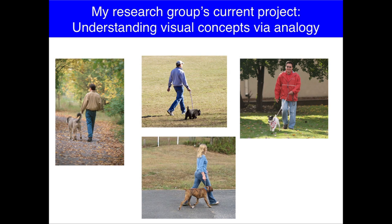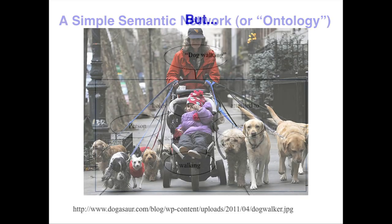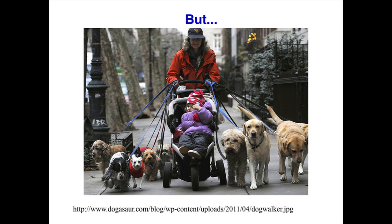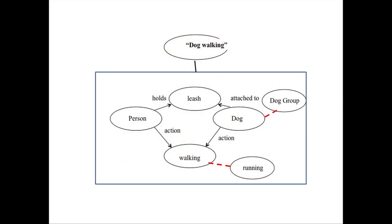Here's a simple visual concept that we've all seen — the concept of walking a dog. We might have a paradigm, semantic network, or what you might call an ontology for dog walking, where you have a person holding a leash attached to a dog who's walking. But there are some issues — like here's a lot of dogs, and here's people running, not walking. So we might have to extend our concepts from dog to dog group, or from walking to running, allowing conceptual slippage.